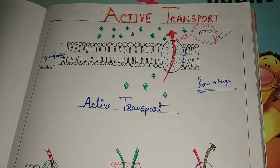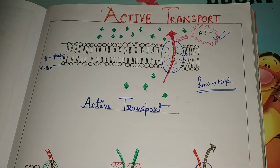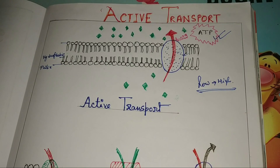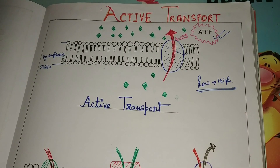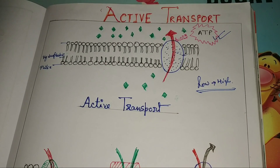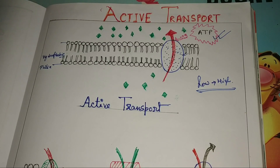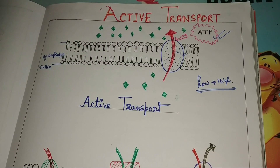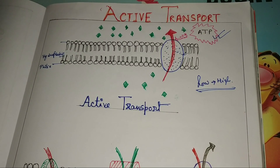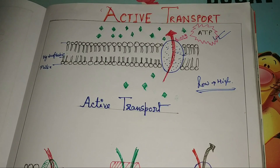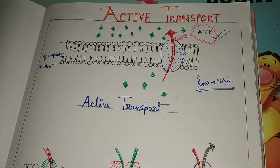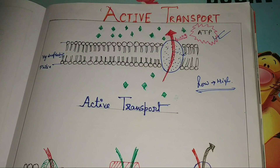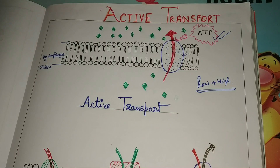ATP is the unit of energy. Without the help of ATP, active transport is not possible. In the case of passive transport, they do not require any ATP.